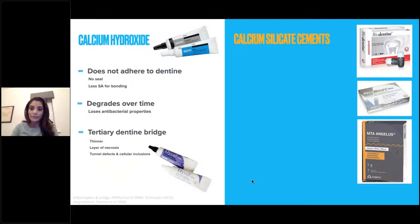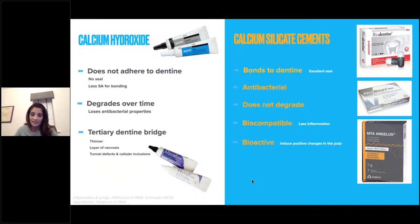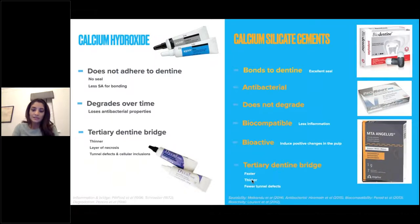The newer products are calcium silicate cements — something like Biodentine or MTA. The benefits are that they bond to dentine giving an excellent seal. They are very antibacterial and remain alkaline. They don't degrade over time. They are very biocompatible, causing much less inflammation. They are actually bioactive — inducing positive changes in the pulp — so the tertiary dentine bridge laid down is formed faster, is thicker, and has much fewer tunnel defects.